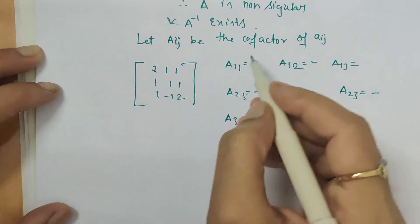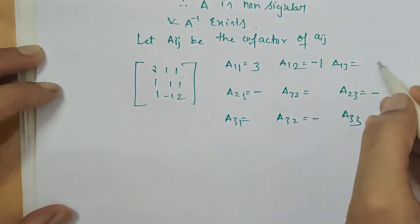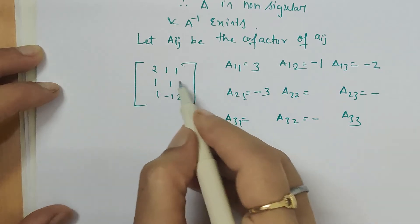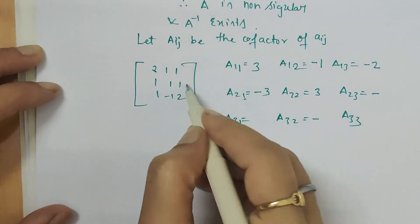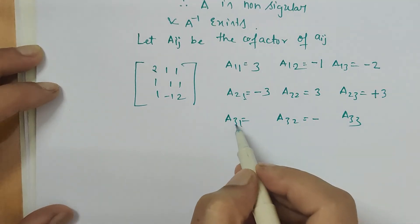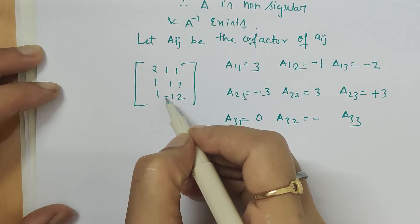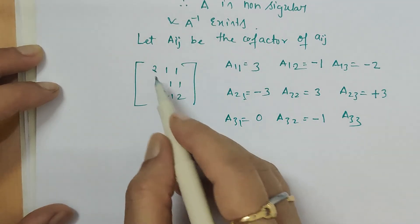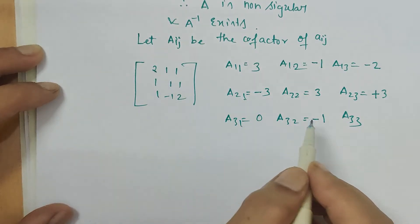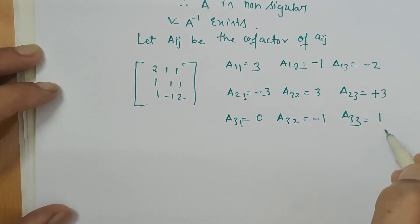Calculating each cofactor: A11 — eliminate row 1 and column 1, giving 1 times 2 minus 1 times 1 equals 1. A12 — with negative sign, result is minus 3. A13 — minus 1 minus 1 equals minus 2. A21 — with negative sign, 2 times 2 minus 1 is 3, so becomes plus 3. A22 — 2 minus 1 is 1. A23 — with negative sign, minus 3. A31 — 1 times 1 minus 1 times 1 is 0. A32 — with negative sign, giving minus 1. A33 — 2 minus 1 is 1.